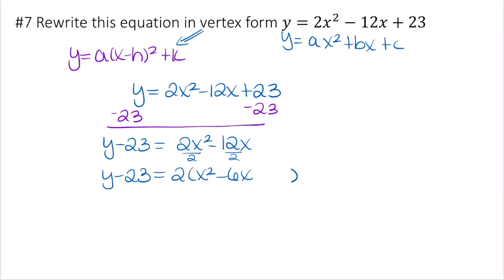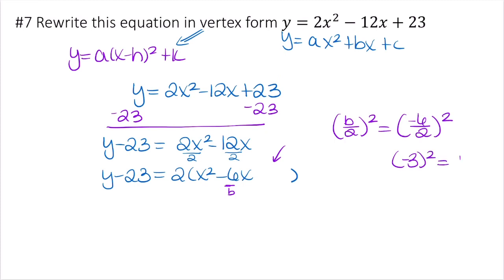To complete the square, take b over 2 and square it: negative 6 over 2 is negative 3, and negative 3 squared is 9. Add 9 inside the parentheses. But because of the factor of 2 out front, we actually added 2 times 9 equals 18. By the property of equality, add 18 to the left side as well to keep both sides balanced.